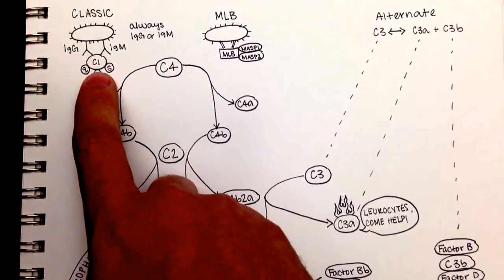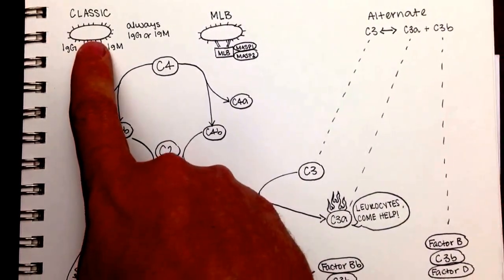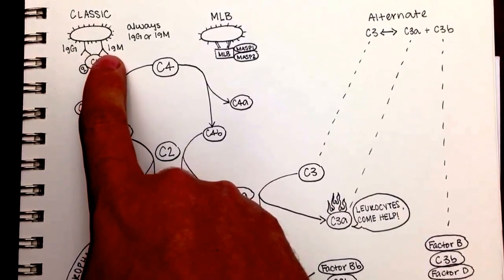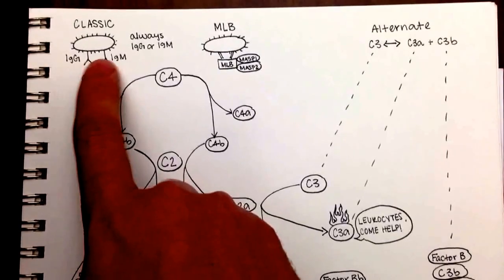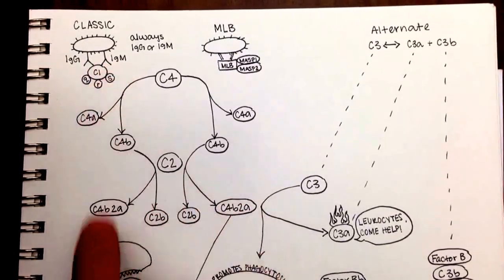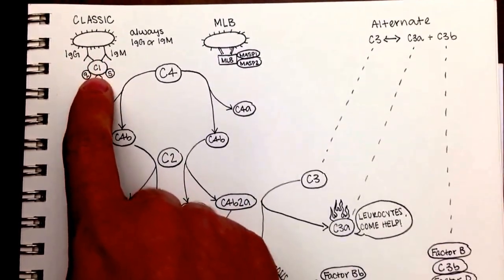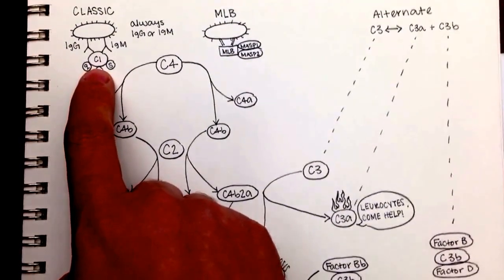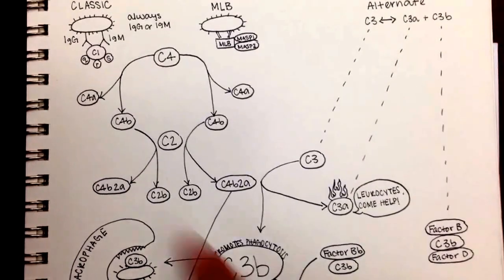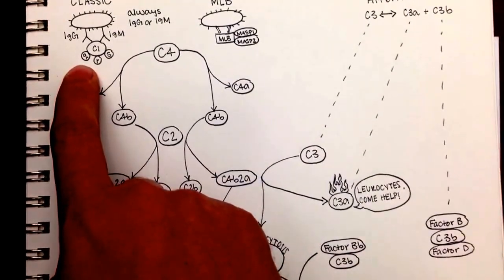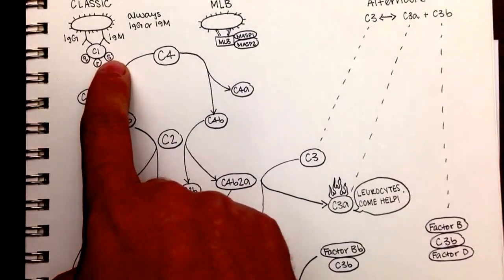So the classical pathway, as you can see here, you have a bacteria that is presented, and two antibodies have bound to this bacteria. It could either be an IgG or it could be an IgM. And the first part of the complement cascade has bound here, C1. So it binds to the IgG or it can bind to IgM. And C1, you can notice here, can pick up a Q, an R, and an S.